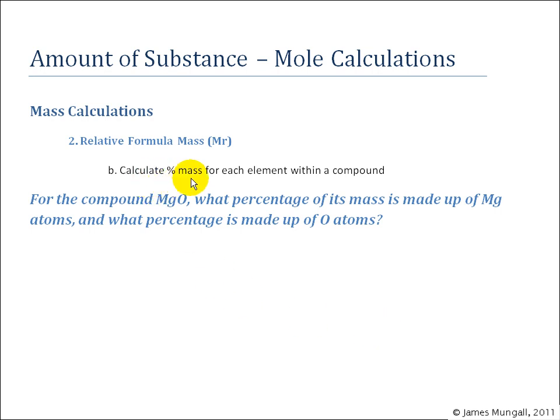Okay, so secondly, calculate percentage mass for each element within a compound. So for example, for the compound MgO, what percentage of its mass is made up of Mg atoms and what percentage is made up of oxygen atoms? Well, the MR of Mg is 24.312 and for oxygen is 16.000.